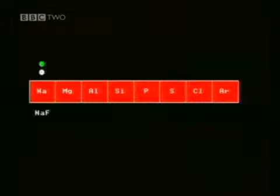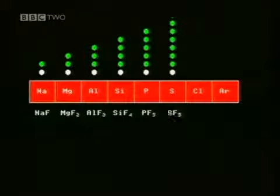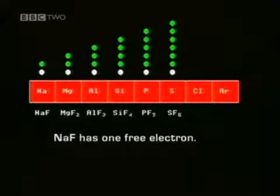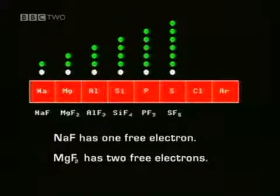In the case of sodium, one sodium atom combines with one fluorine atom. For magnesium, one atom combines with two of fluorine. For aluminium, it's one and three, and so a pattern emerges. But why do the elements react in this way? Sodium in group 1 has one free electron in its outer shell so it combines with one atom of fluorine. Magnesium in group 2 has two free electrons in its outer shell so it combines with two atoms of fluorine, and so on.